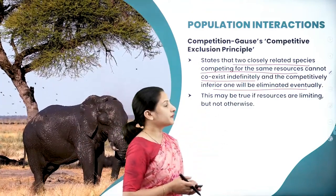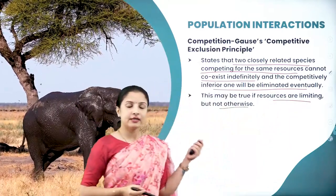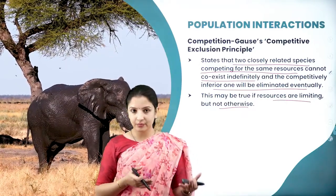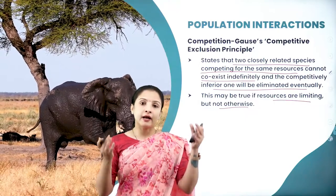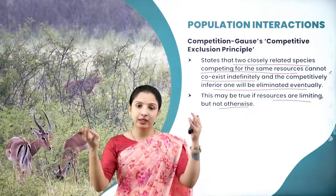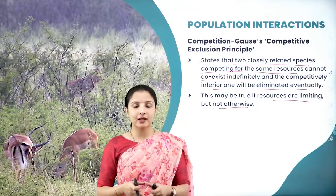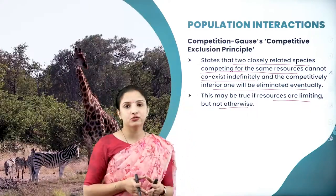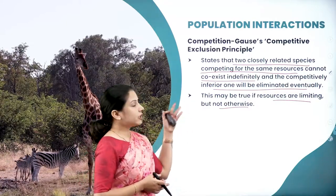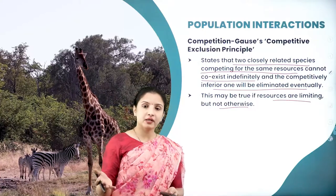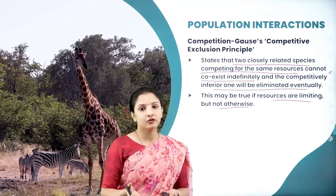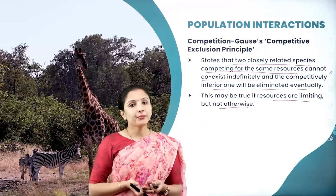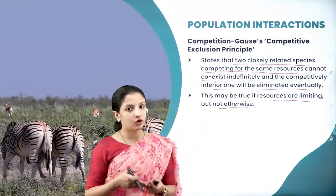The Gause competitive exclusion principle states that two closely related species both competing for the same available resource in a particular area cannot co-exist, and the competitively inferior one will eventually be eliminated. Competitive release will not help when resources are limiting and both species depend on the same resource in that particular area. Eventually the superior competitive species will survive and the inferior competitive species might become extinct.